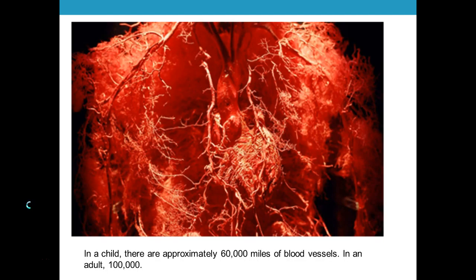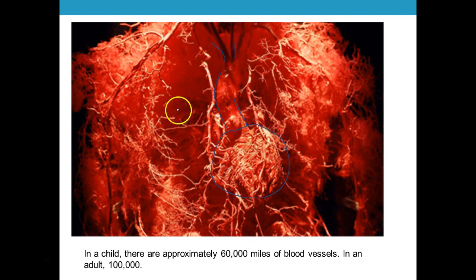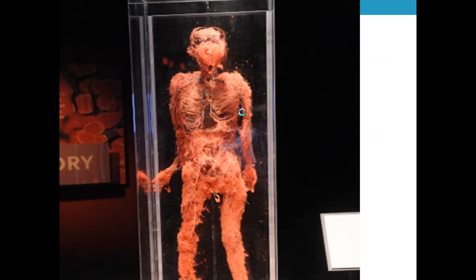Here's what that network looks like. In a child, approximately sixty thousand miles of blood vessels if you took them all and put them end to end. In an adult that's a hundred thousand. You can see the heart right up in here, a huge aorta, and it branches into the carotid arteries going up to the brain. Another picture shows a full adult with just blood vessels and nothing else.